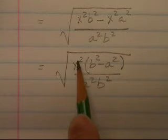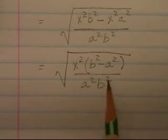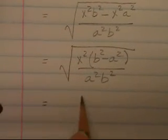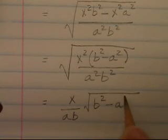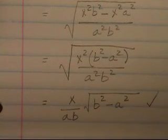The square root of x squared over a squared b squared—those will both come out of the radical. I will have x over ab, but that difference of squares will remain in the radicand: b squared minus a squared. This is as simple as I can make this expression.